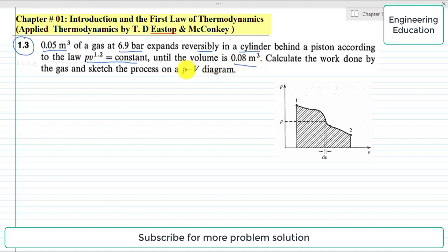The volume expands until 0.08 cubic meter. Calculate the work done by the gas and sketch the process on a P-V diagram. In this problem we have given some information, first we will write this information.